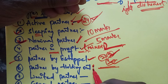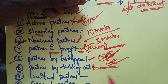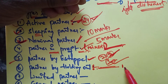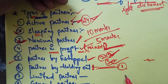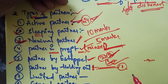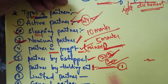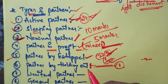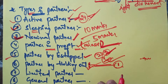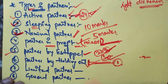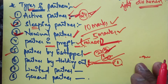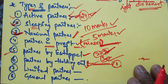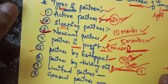Partner by holding out is similar — he is also not actually a partner. But when existing partners tell third parties that someone is a partner, and that person does not deny or react to that claim, then in that condition he becomes a partner by holding out. These are the types of partners. This topic is very important and may come in 10 marks or 5 marks, so you should be ready for both. We will cover another topic in the next class.